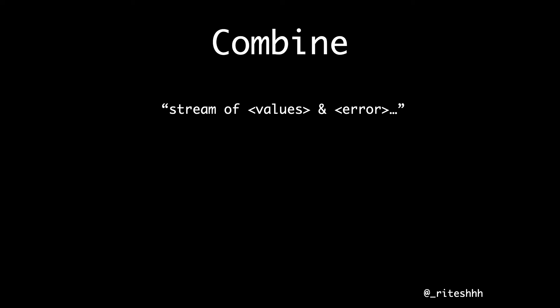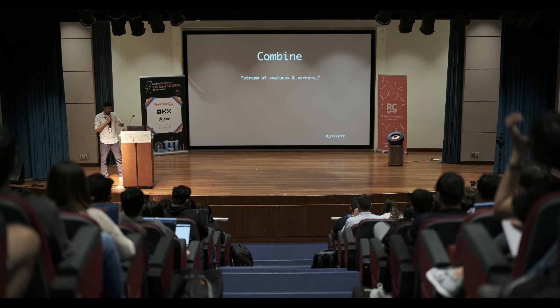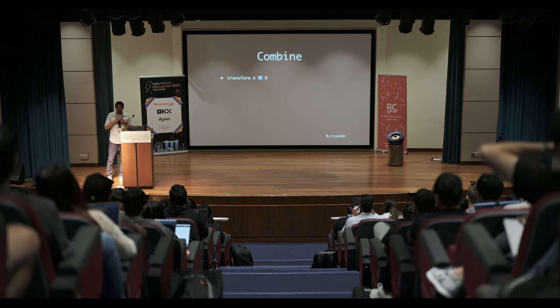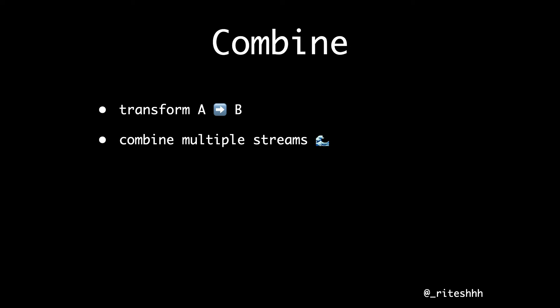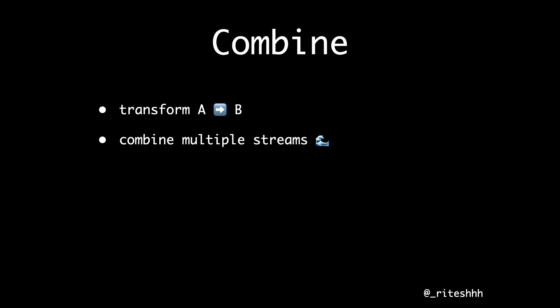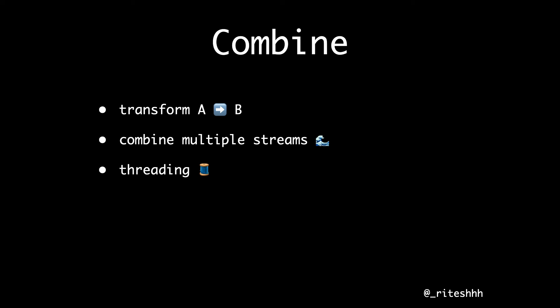So what is Combine? Combine is essentially a stream of events. Those events could be values or errors. Combine always had this idea of breaking the pipeline where we deal with values separately and errors separately. You can transform values using operators like map, or combine multiple streams — that's where you get more power. You can combine those streams and do something more powerful with combine latest, zip, debounce, etc. Combine also had threading built in, so you can switch threads using subscribe on and receive on.